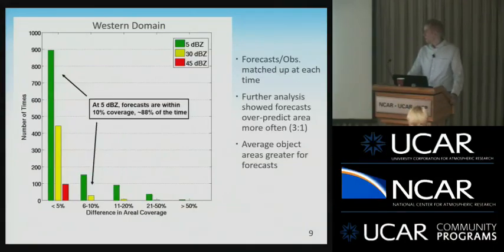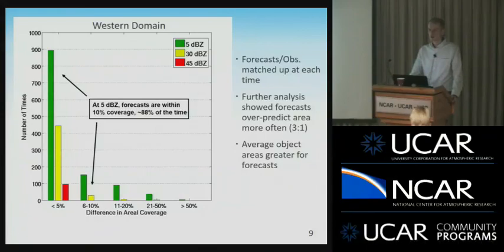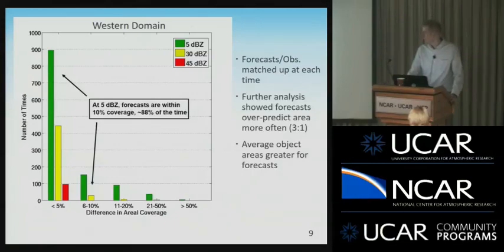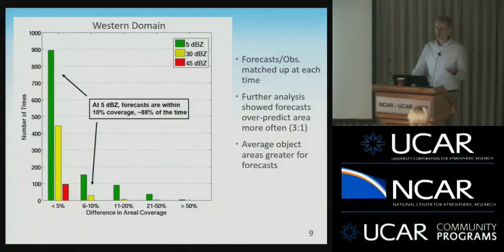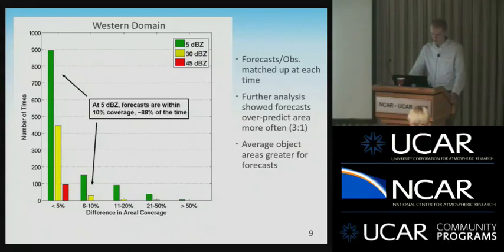We also looked at the difference in aerial coverage — how much area did the model forecast versus how much area did we observe? We matched up forecasts and observations at each hour and found the difference in aerial coverage. At 5 dBZ, forecasts are generally within 10% coverage of the radar 88% of the time, which is pretty good. However, when we compared each time to see whether the forecast had more area or less, we found forecasts over-predicted the area three times more often than under-forecasting. And comparing average object areas, the forecast had much bigger objects on average than what we actually observed.